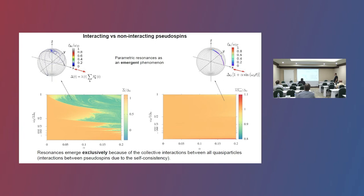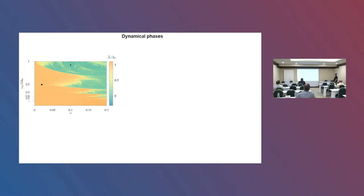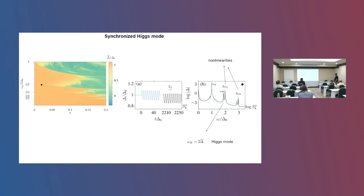Let me analyze the different dynamical phases in this regime. Outside the Arnold tongues, the dynamical evolution of the order parameter looks relatively simple, but the Fourier transform of the signal shows not only the drive frequency but also high harmonics, since the system is very nonlinear. More interestingly, you also get a peak that is equal to twice the average of the superconducting order parameter — something related to the superconducting properties of the system, not the drive frequency. This is called the Higgs mode, and it emerges as a consequence of synchronization.